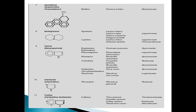The eighth class is norlupin alkaloids. Sparteine or lupinine is the alkaloid present in this class. Lupinus luteus is the botanical origin and the family is Leguminosae.